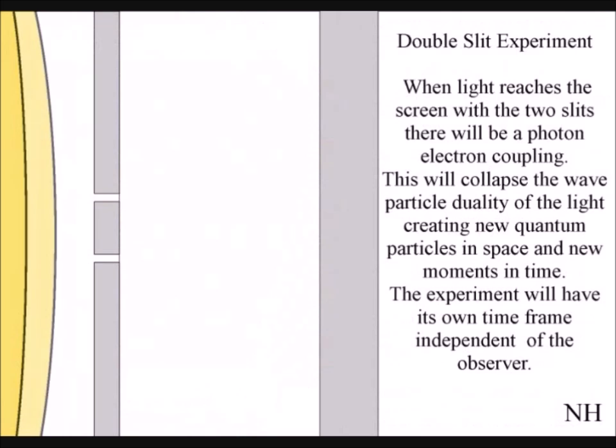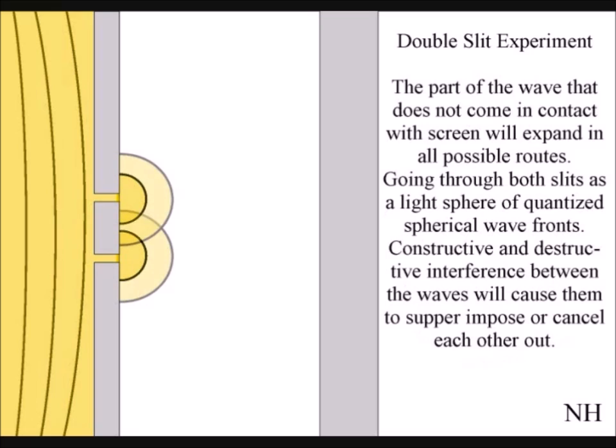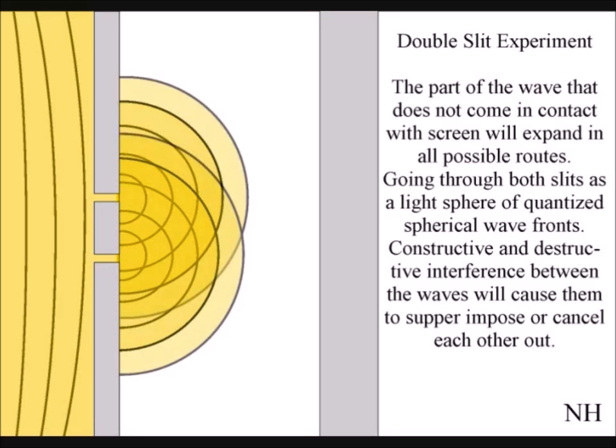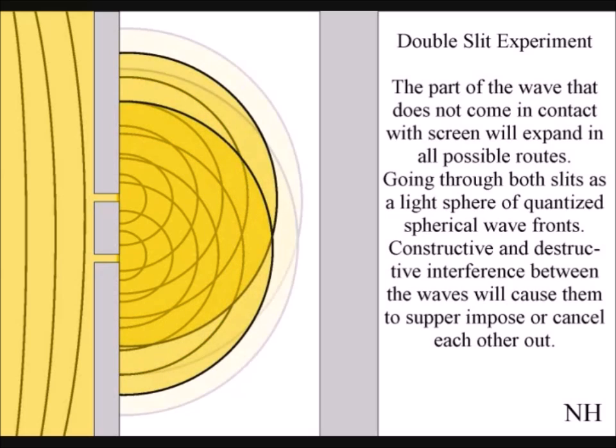To do this, the photon has to go through both slits at the same time. This is possible because the electromagnetic field itself is not quantized, and light as a wave can go through both slits at the same time.